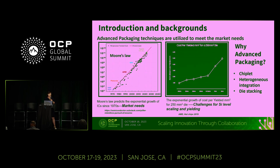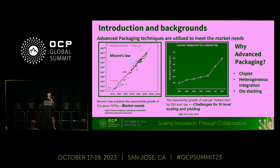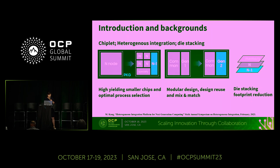The graph on the left shows the market needs. We all know that transistor numbers basically double roughly every two years, but the graph on the right demonstrates the challenges for silicon-level scaling and yielding. It is getting more and more difficult and expensive to use traditional methods to increase transistor numbers. That's why advanced packaging is getting more and more important to the industry.